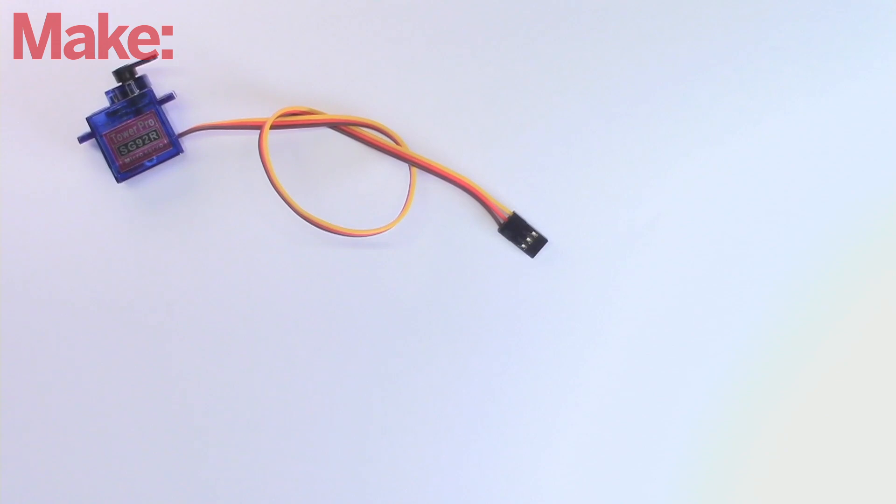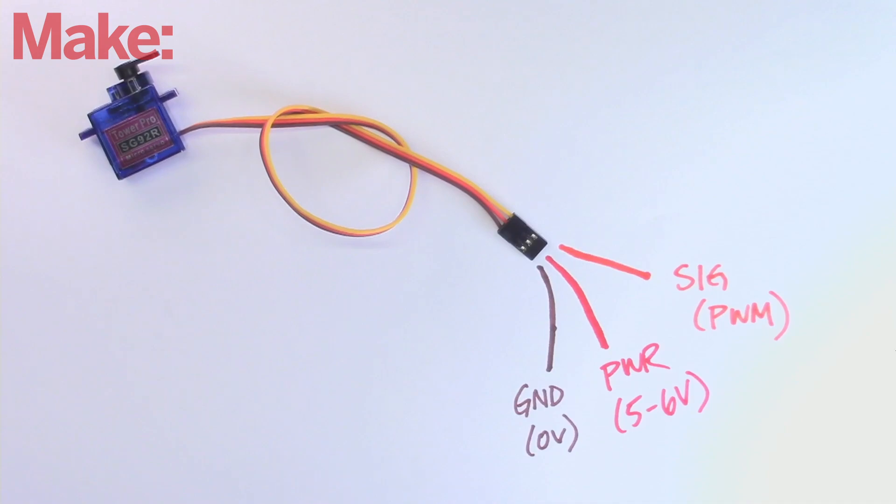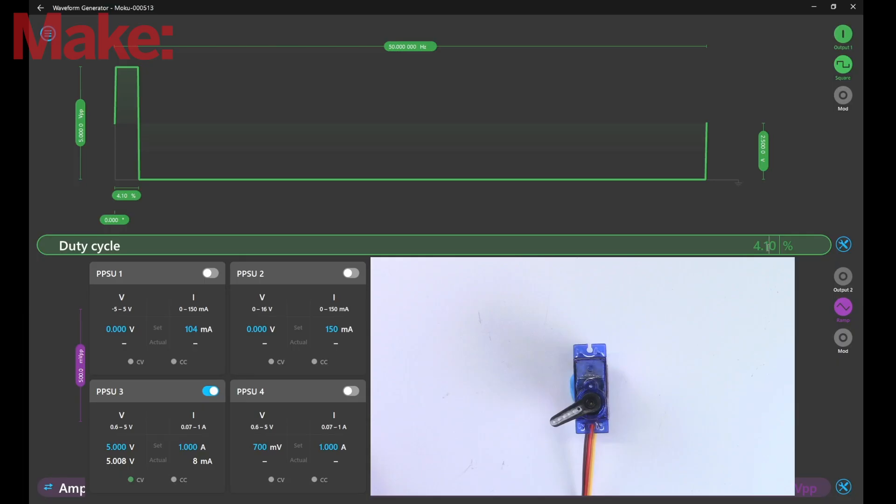Servos can be small or large, and you can attach them to your project with a variety of different horns, adapters, and arms. A typical servo will have three wires, one for ground, one for power, and one for a PWM signal. When we hook it up to our power supply and waveform generator, we can see that the PWM we send to the servo affects its position.